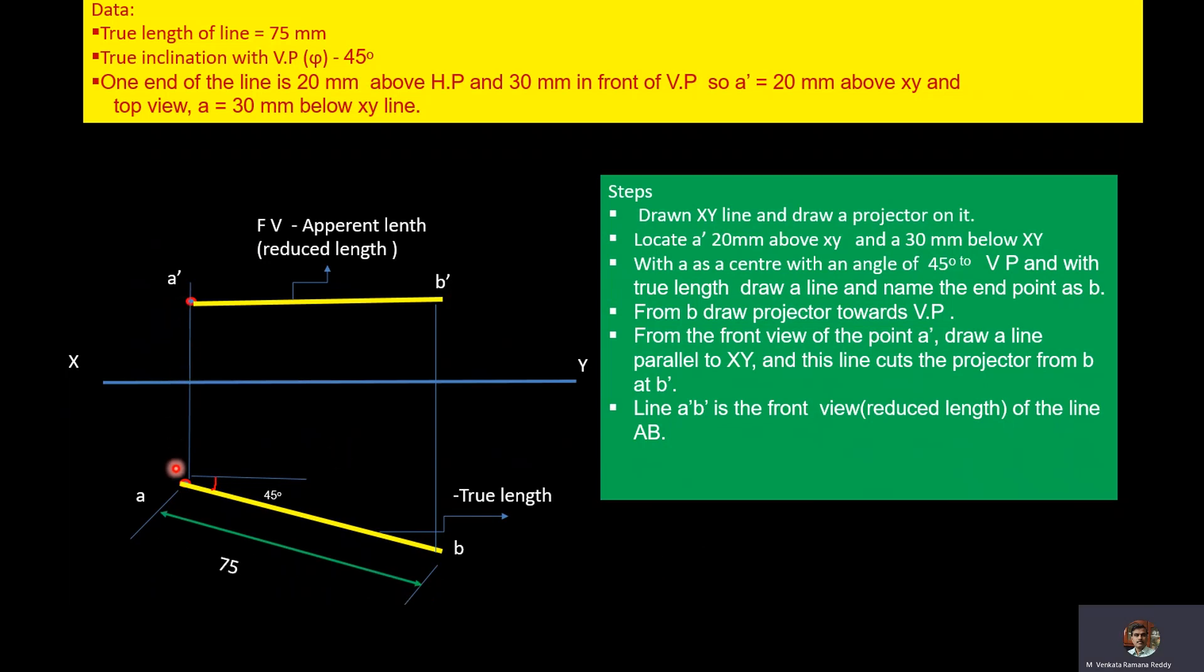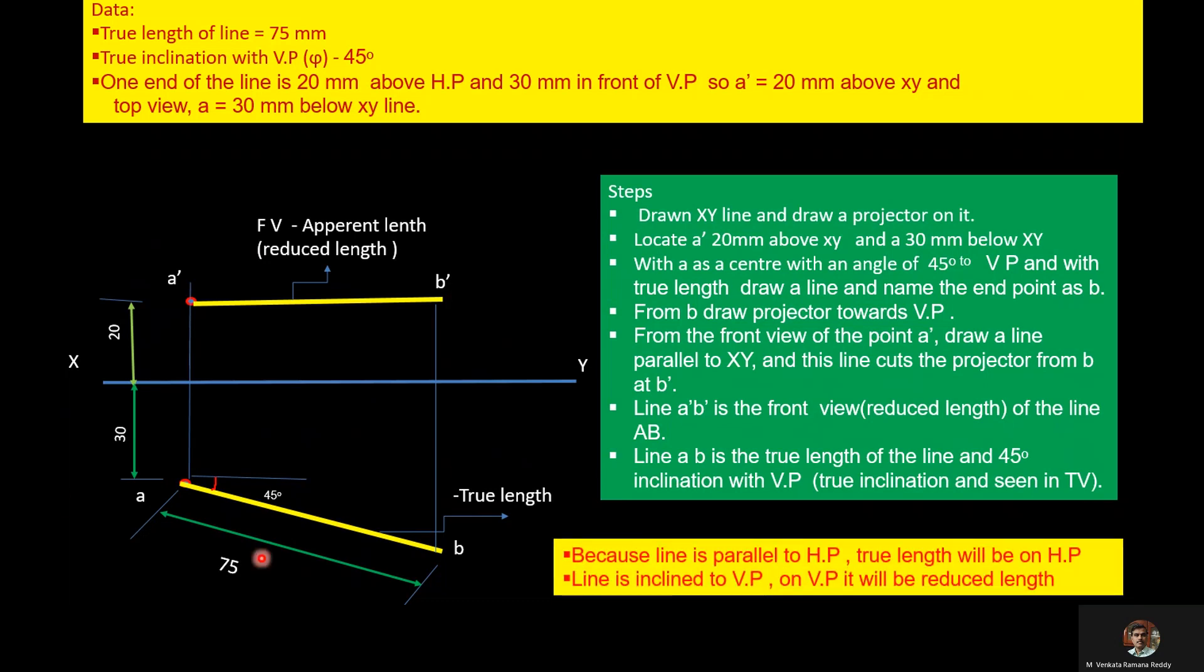Because the line is parallel to HP, true length will be on HP. The line is inclined to VP, so on VP it will be reduced length.